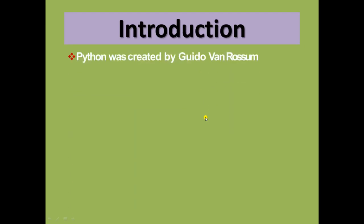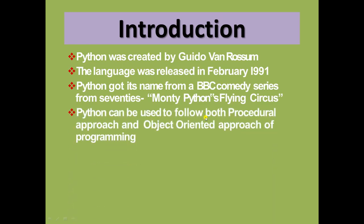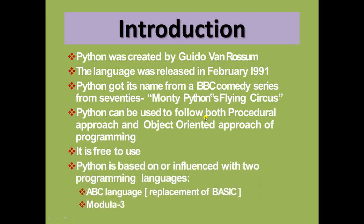Introduction: Python was created by Guido van Rossum and was released in February 1991. Python got its name from a BBC comedy series from the 70s, that is Monty Python's Flying Circus. Python can be used to follow both the procedural approach and the object-oriented approach of programming. It is free to use — anybody can use it. Python is influenced by two programming languages: the ABC language and the Modular-3 language.